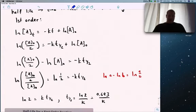Natural log of A equals minus kt plus ln A₀. At half-life, concentration is half the initial, so ln of one half equals minus k times the half-life. That means half-life is natural log of 2 over k, or 0.693 over k.